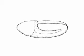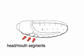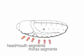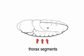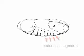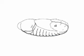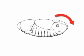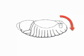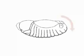Body segments then become defined. The first three segments will give rise to the head and mouth parts, the next three to the thorax, and the remaining ones to the abdomen. Eventually, the rear end of the embryo will retract back onto the ventral side and straighten out the embryo. Development to this stage takes about 10 hours.